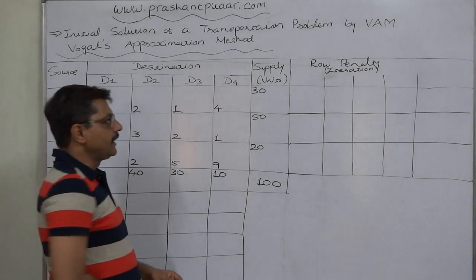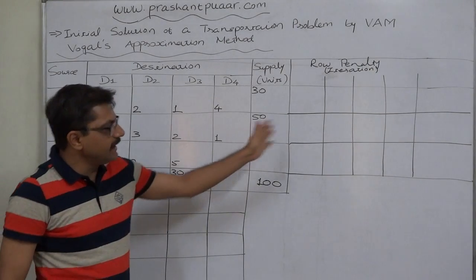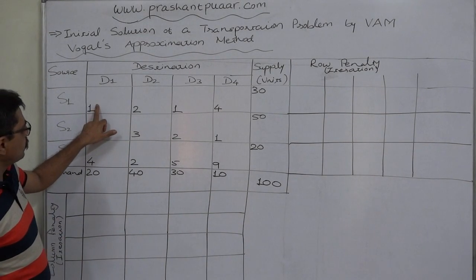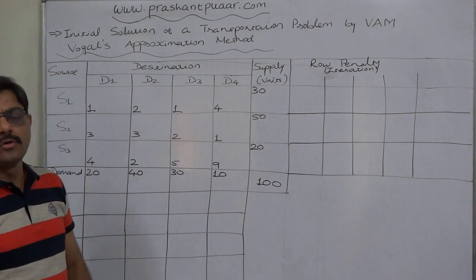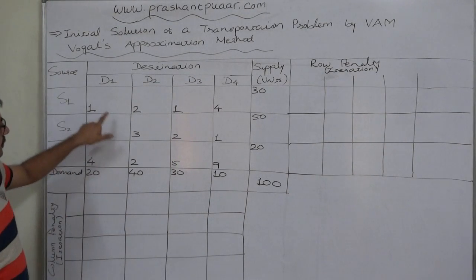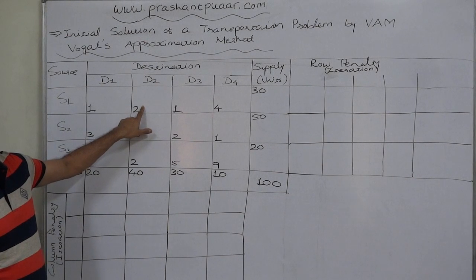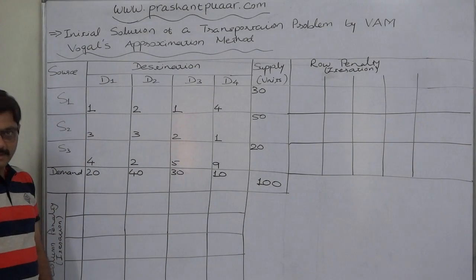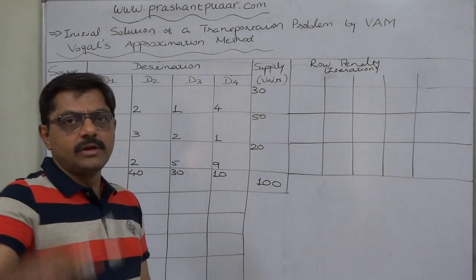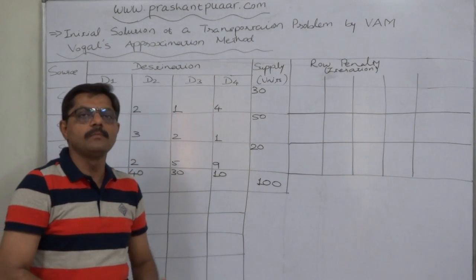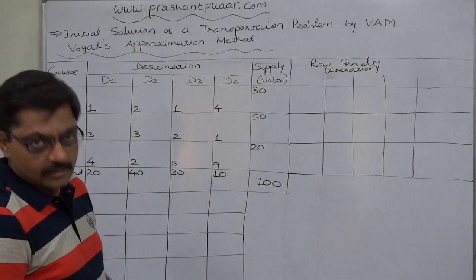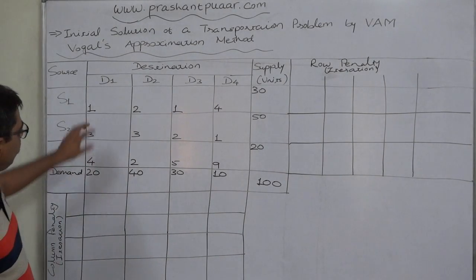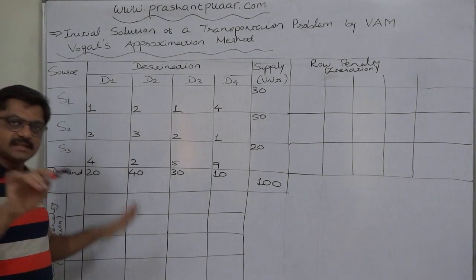For this purpose, first we have to calculate the penalty for each and every row and column. Penalty is the difference between the least cost and the immediate higher cost of a row or column. For each row and column, we calculate the penalty, then select the row or column with the highest penalty, and in that selected row or column, the cell with the lowest cost is selected and allocation is made.